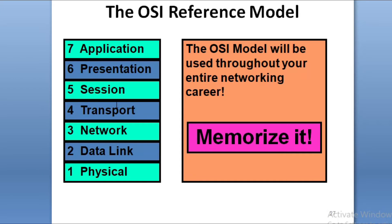The OSI Reference Model has a total of 7 layers. Layer 1 is at the bottom and layer 7 is at the top, and vice versa depending on direction.